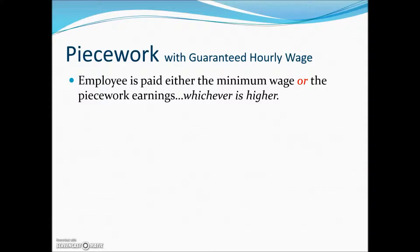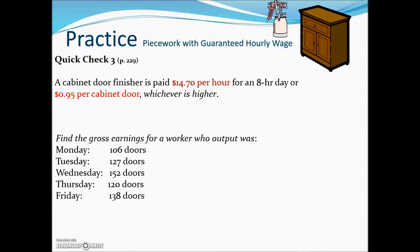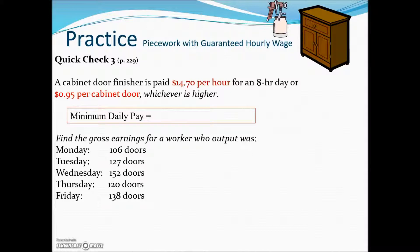Piecework and differential piecework rates are frequently modified to include a guaranteed hourly pay rate. This is often necessary to satisfy federal and state laws concerning minimum wages. With this method, the employer must pay either the minimum wage or the piecework earnings, whichever is higher. For example, a cabinet door finisher is paid $14.70 per hour for an 8-hour day — a guaranteed daily minimum of $117.60 — or $0.95 per cabinet door, whichever is higher.